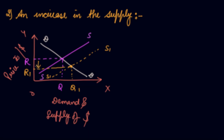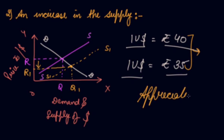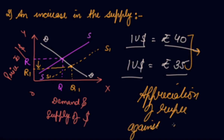The exchange rate has reduced. Before you used to exchange one dollar for rupees 40; now you can exchange one dollar for rupees 35. Which means before you had to pay more rupees for one dollar, now you are paying less rupees for one dollar — it means there is an appreciation of rupee against dollar. In the same way, if there is a decrease in the supply, the supply curve will shift upward, which will increase the rate of exchange and there will be a depreciation of rupee against dollar.